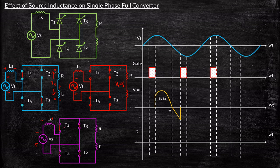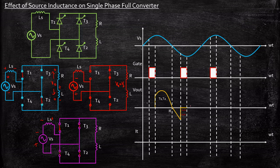T1 and T2 will continue to conduct until the energy available in the source inductor is discharged through the resistor R. During this period, the output voltage is essentially a short circuit — Vout equals zero. This is because all four thyristors T1, T2, T3, and T4 are conducting simultaneously. This concept is called overlapping, meaning all four thyristors are conducting and overlapping with each other. The angle associated with this overlap is called the overlap angle, denoted by mu.